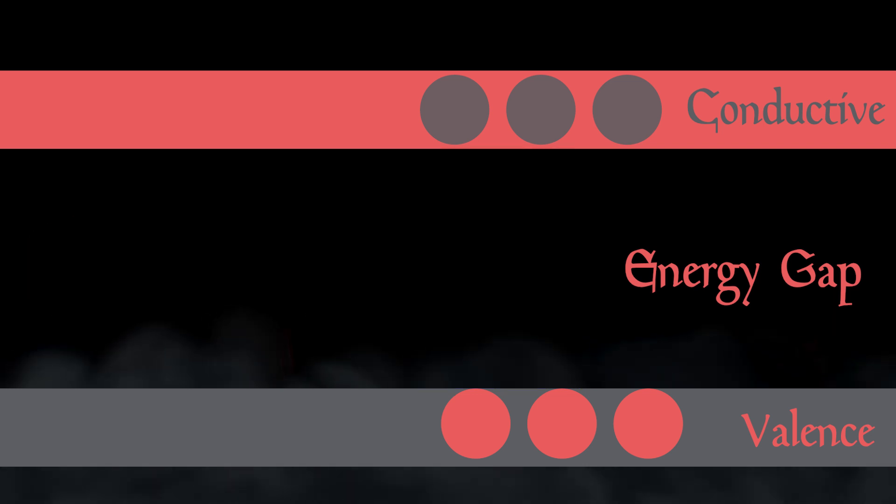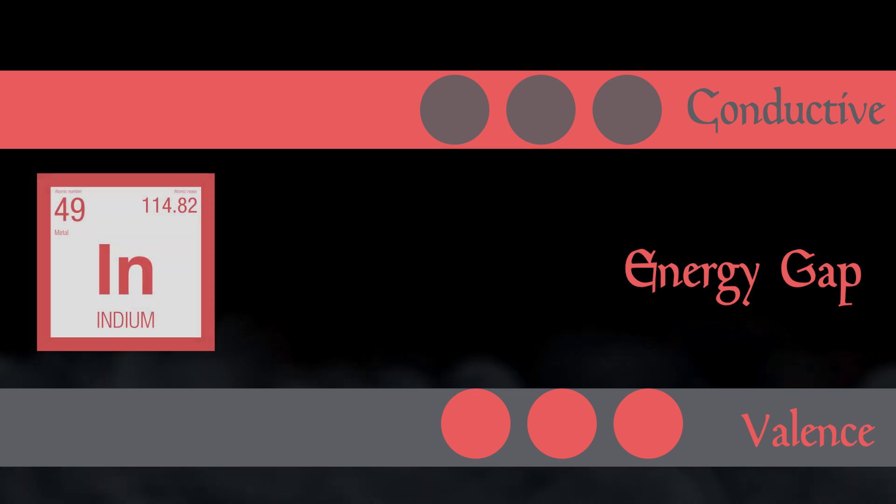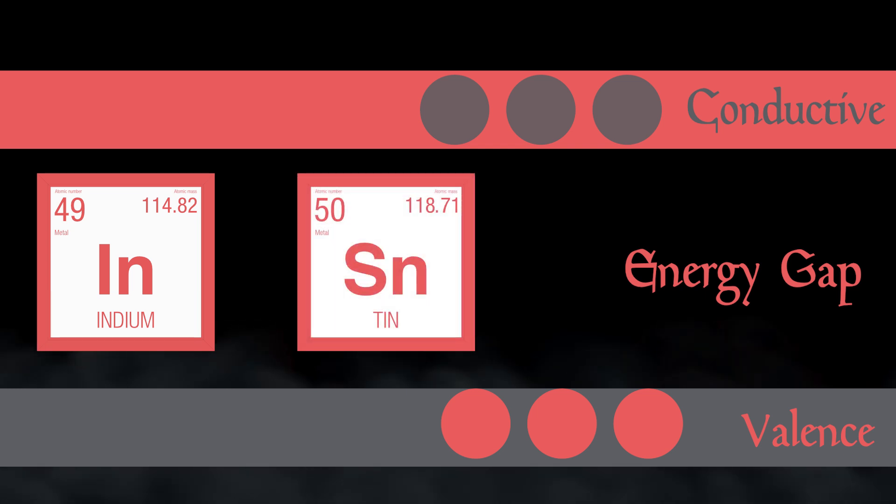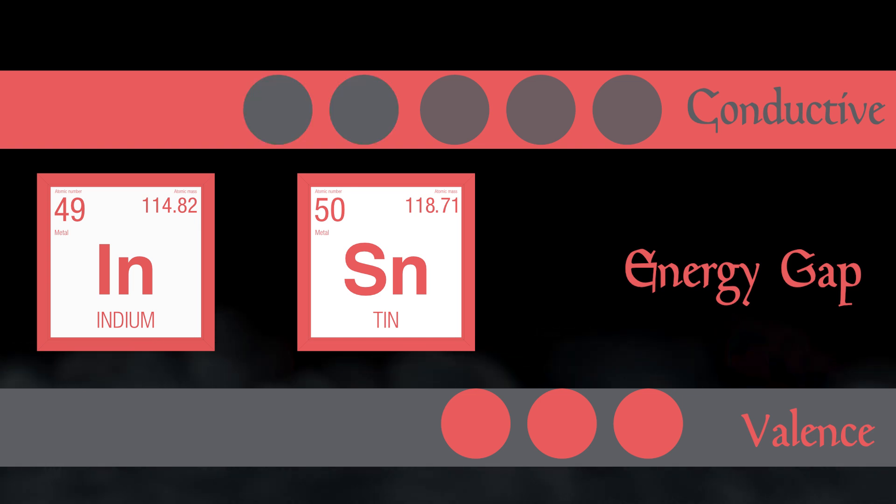and ITO is formed by replacing about 10% of the indium atoms in indium oxide with tin atoms. This process is called doping and it amazingly allows ITO to be almost as conductive as metals at the same time maintaining the energy gap for transparency. This is because each tin atom naturally has one more electron than an indium atom, so doping indium oxide with tin adds electrons to the material.